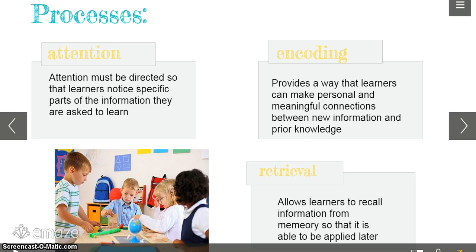The second process is encoding. This provides a way that learners can make personal and meaningful connections between new information and prior knowledge. I know that used to be a huge emphasis in reading in elementary school — making connections, background knowledge. It's gone away a little bit, especially in the younger grades, but I still use it a lot because I find it is so important for kids to make that connection with background knowledge. Then it goes into retrieval, which allows the learners to recall information from memory so that it can be applied later when it's relevant.